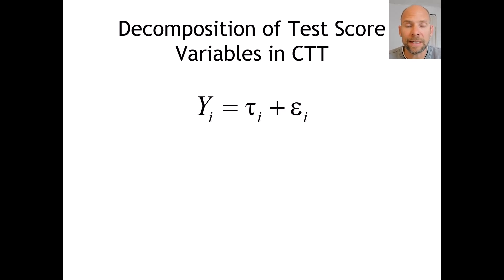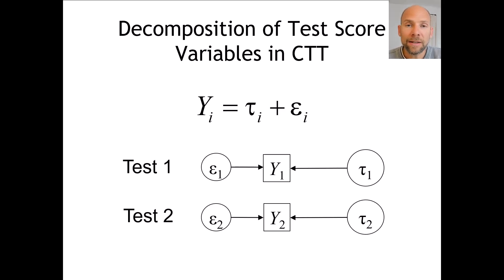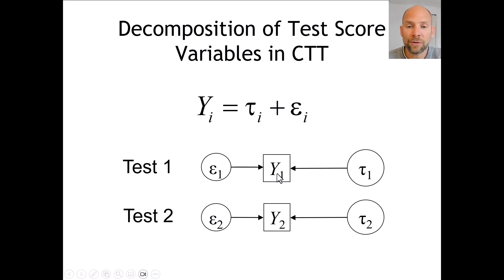Epsilon is the error variable — the difference between y and tau — and it captures unreliability or measurement error in the observed scores. We can depict that decomposition with a path diagram for two tests or two measures. Each test has its own true score variable and its own associated error variable according to the basic decomposition of classical test theory. So each of the two test score variables y1 and y2 is broken down into its own true score tau_1 and tau_2, and error terms epsilon_1 and epsilon_2.